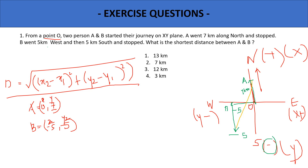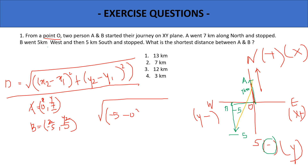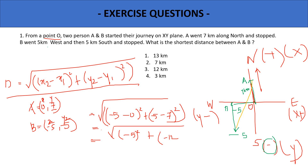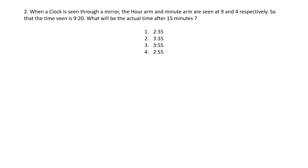Putting the numbers in: (−5 − 0)² + (−5 − 7)². The minus values cancel appropriately, giving us 5² + 12², which is 25 + 144 = 169. The square root of 169 is 13, so 13 is the correct answer.